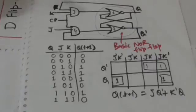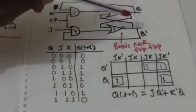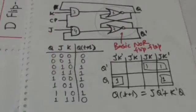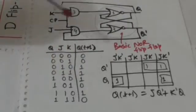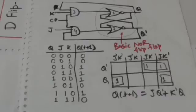It means the next state will be 0. It is because in this case, the output of gate 3 will be 1 and the output of gate 4 will be 0. As we have already studied, in the basic NOR flip-flop, when the input of gate 1 is 1 and input of gate 2 is 0, the flip-flop switches to clear state. So in this case, JK flip-flop will switch to clear state.